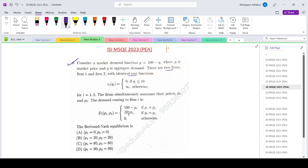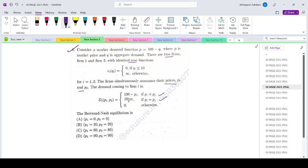The firms simultaneously announce their prices P1 and P2. The demand coming to firm I is as follows: it will get the entire demand if its price is lesser than the other, it will get half of the demand if it is equal to the price of the other, otherwise it will get no demand. So the Bertrand-Nash equilibrium is which of the price combinations?